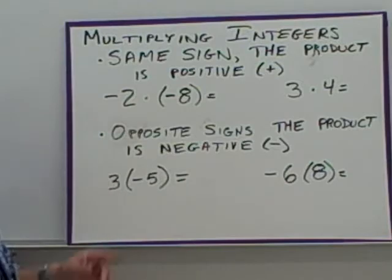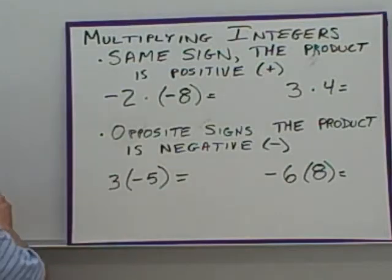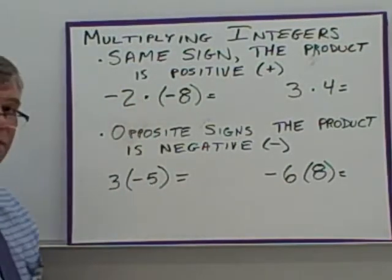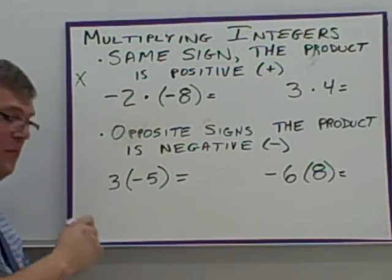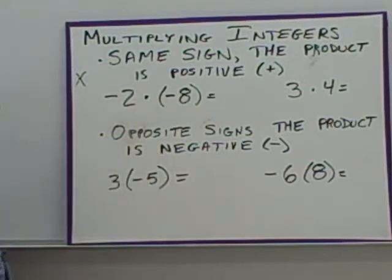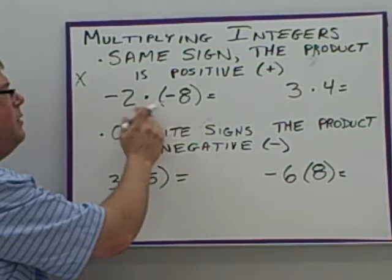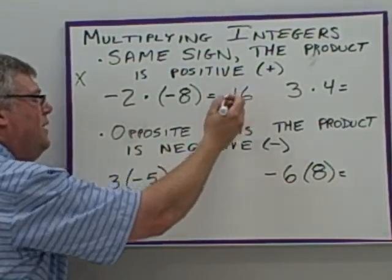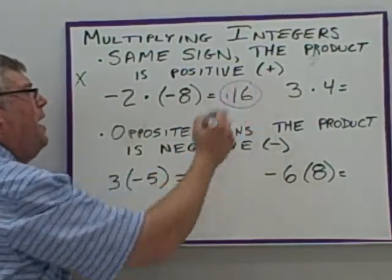Multiplying integers. When multiplying integers, if the two numbers have the same sign, the product is positive. This dot in the middle is replacing the x that used to represent multiplication — we now use this dot for multiplying. Negative 2 times negative 8: same sign, so we multiply the numbers. 2 times 8 is 16, and negative times negative is the same sign, so the answer is positive 16.